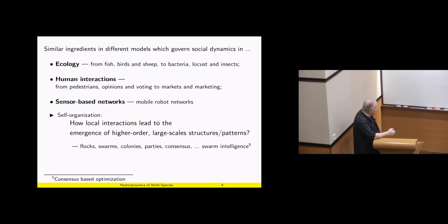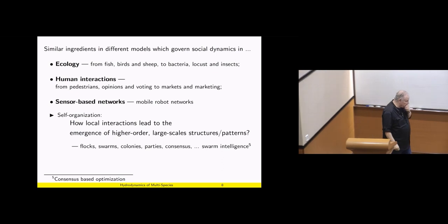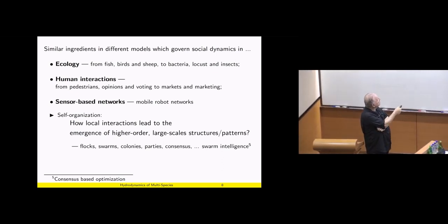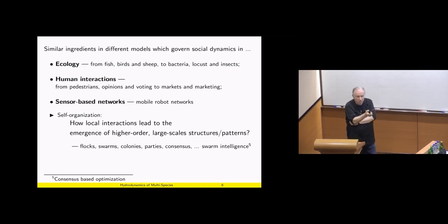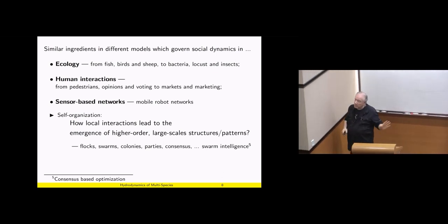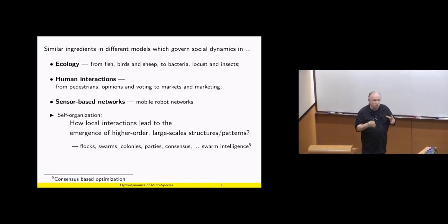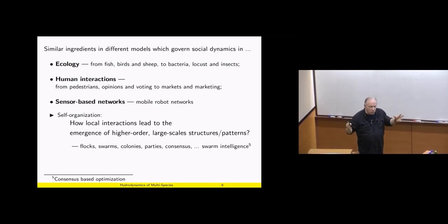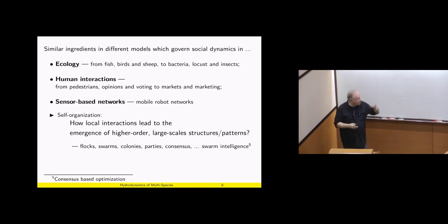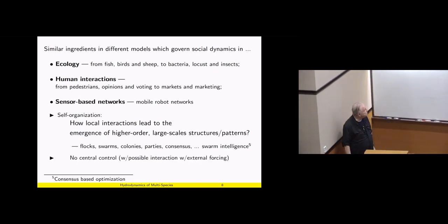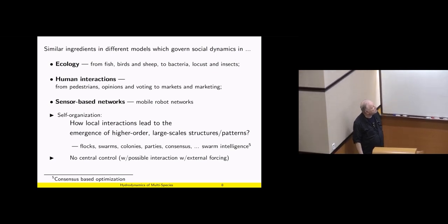This hierarchy appears in different contexts of ecology — fish and birds, human interaction, sensor-based networks. In all these cases the question is self-organization: how local interactions lead to the emergence of higher-order, larger-scale structures. These larger-scale structural patterns are called flocks, swarms, colonies, parties, consensus, swarm intelligence, and so forth. I did not address this before — I just addressed formation of multiflux. Now I'd like to know: what is the large-time behavior and the emergence coming out of different species?